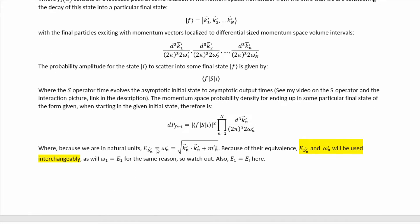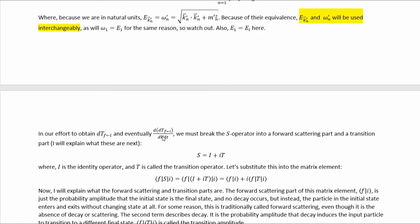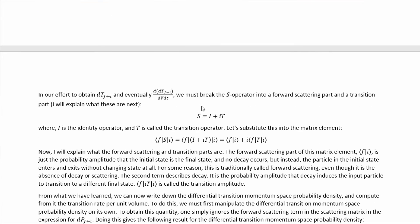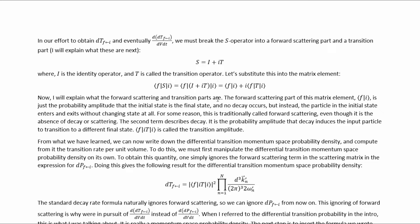Because we're in natural units, energy and momentum quantities are interchangeable, and I'll use E1 and E_I interchangeably for the initial energy of the decaying particle. To obtain the transition probability density, we must break up the S operator into a forward scattering part and a transition part. The breakup is conventionally S = I + T, where I is the identity operator and T is the transition operator. The forward scattering part is the probability amplitude that no decay occurs and the particle enters and exits without changing state. The second term describes decay — the probability amplitude that decay induces the input particle to transition to a different final state.